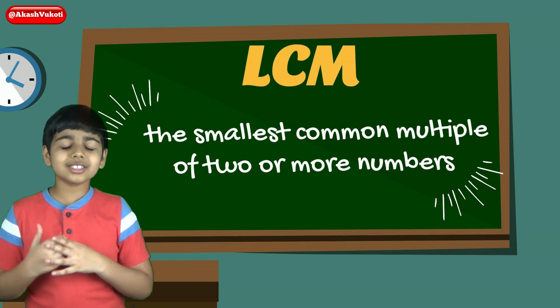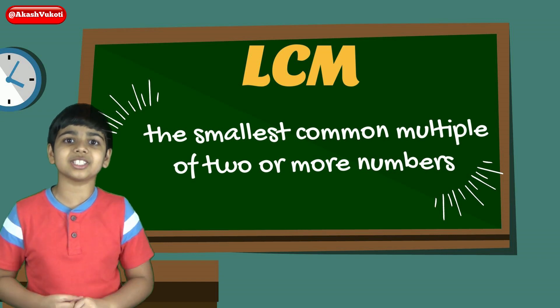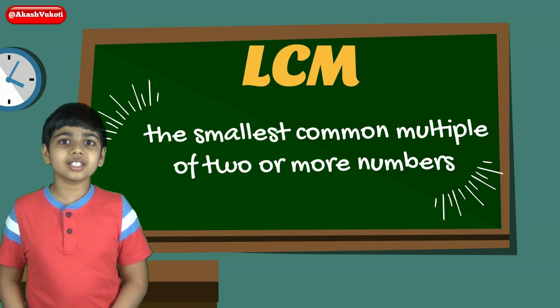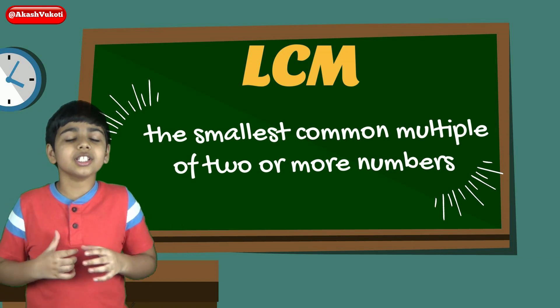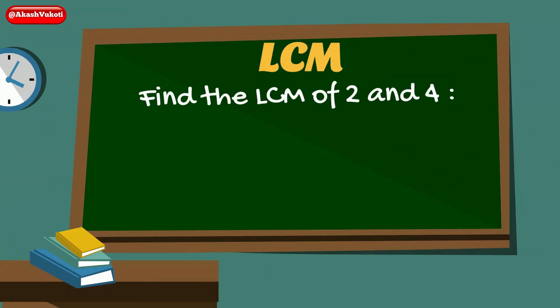Now let's take an example of how we're going to find the LCM of two numbers. Let's try to find the LCM of 2 and 4. The way we're going to do this is step 1: we're going to find the multiples of both of these numbers.